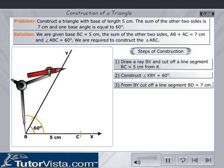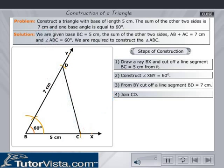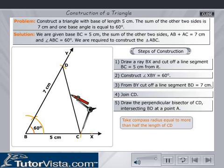From BY cut off a line segment BD equal to 7 cm. Join CD. Draw the perpendicular bisector of CD intersecting BD at point A.